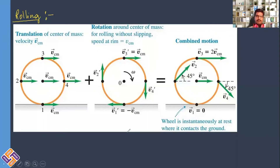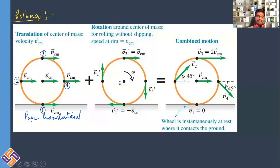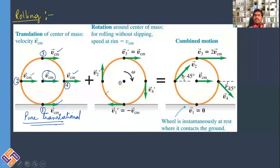Each particle in a rolling body has two velocities: translational and rotational. Consider a sphere with four particles at positions one, two, three, and four. For pure translational motion, all particles of the body have the same velocity equal to the velocity of the center of mass, vcm, in the same direction — this applies to particles at positions one, two, three, and four equally.